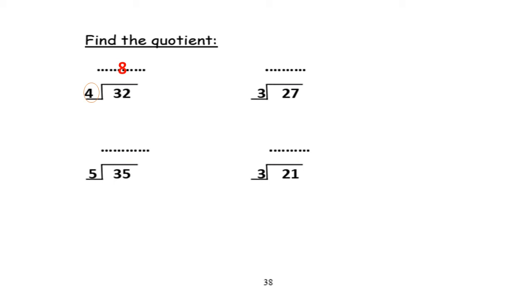The second example: 27 divided by 3. Circle the number after the sign — it's the number outside the home. I will sing the song of table 3 until you get 27. Close your hands. Sing with me, please: 3, 6, 9, 12, 15, 18, 21, 24, 27. So the answer will be 9 — you are now open 9 fingers.